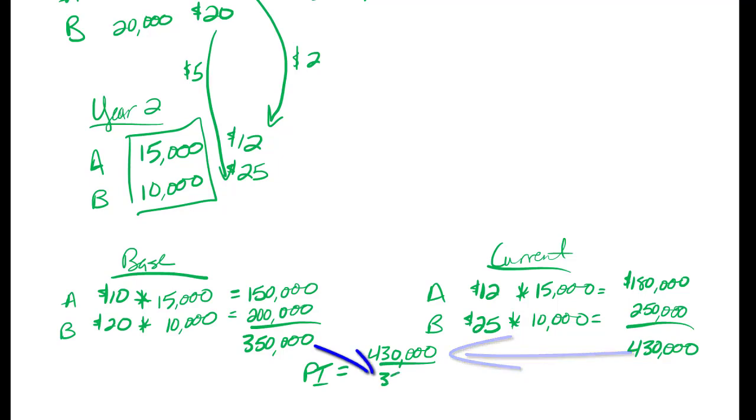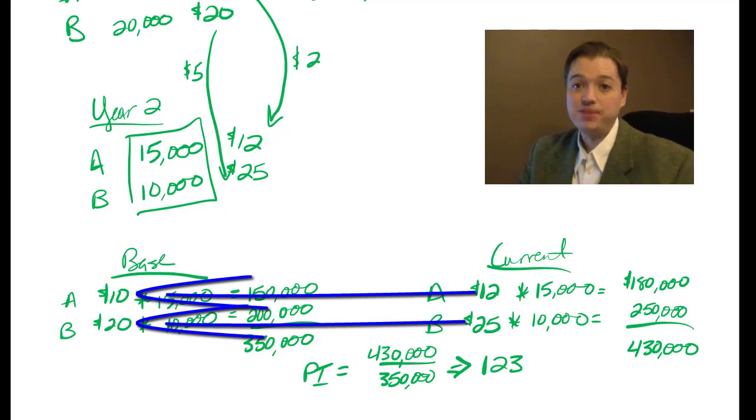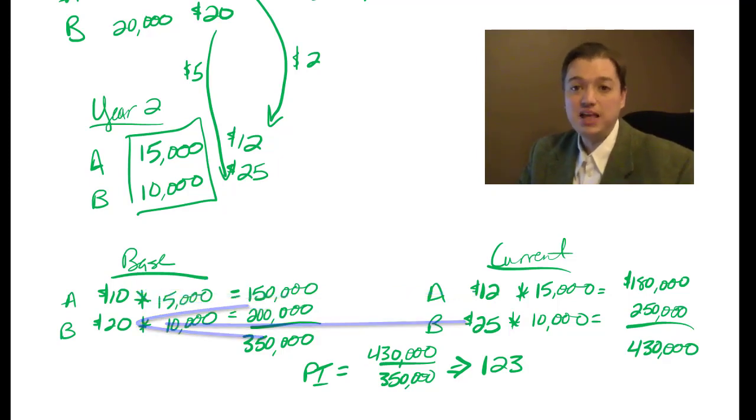And now I can get my price index. $430,000 divided by $350,000 gives me a price index of 123. And I can't get that by comparing the $12 to the $10 or the $25 to the $20. So it becomes more of a weighted average, and that's my calculation for a price index. When we come back, we'll start talking about how to do the rest of the dollar value LIFO system. I'll see you then.